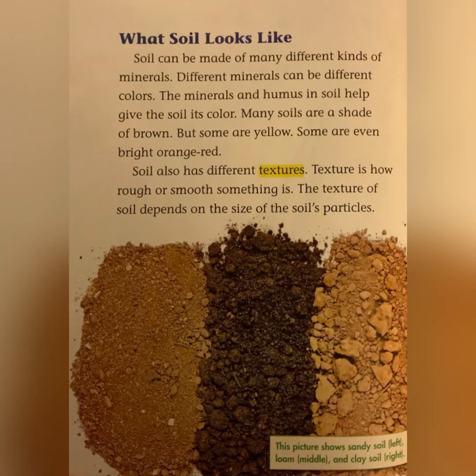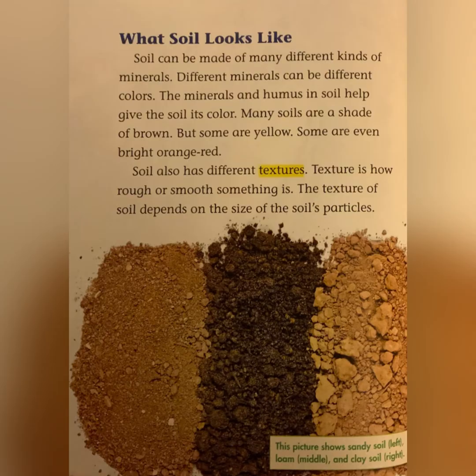What does soil look like? Soil can be made of many different kinds of minerals, and different minerals can be different colors. The minerals and humus in soil help give the soil its color. Many soils are a shade of brown, but some are yellow, and some are even bright orange. Soil also has different textures. Texture is how rough or smooth something is.